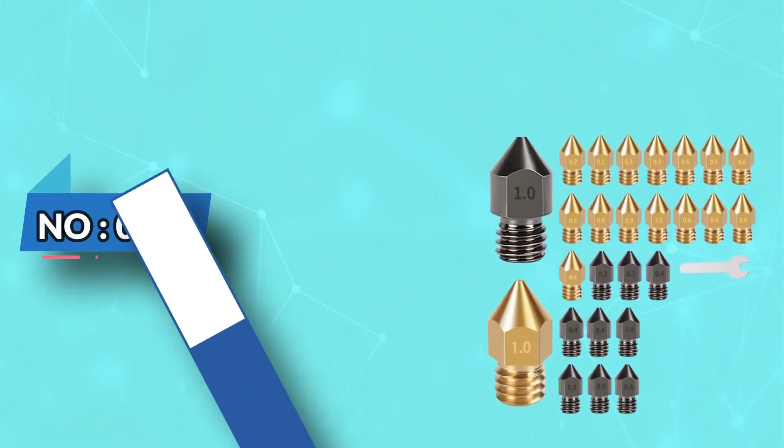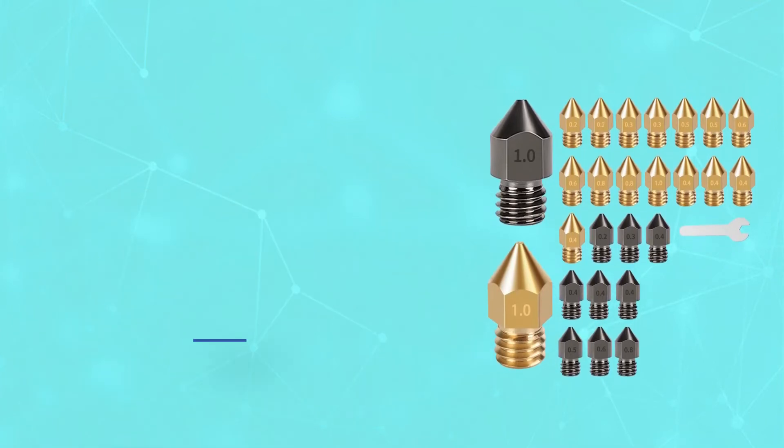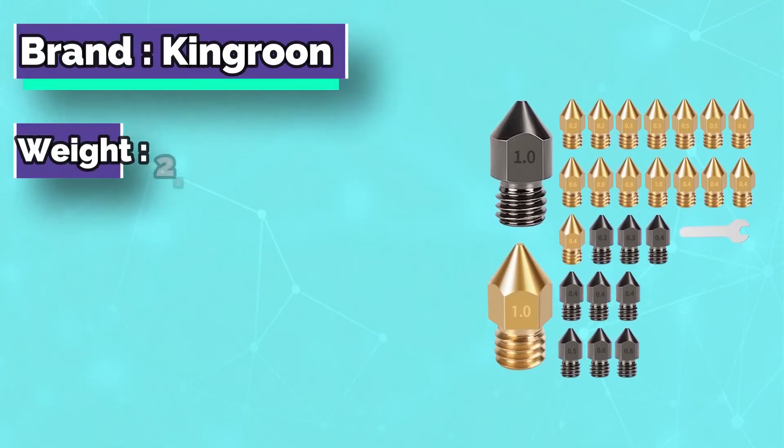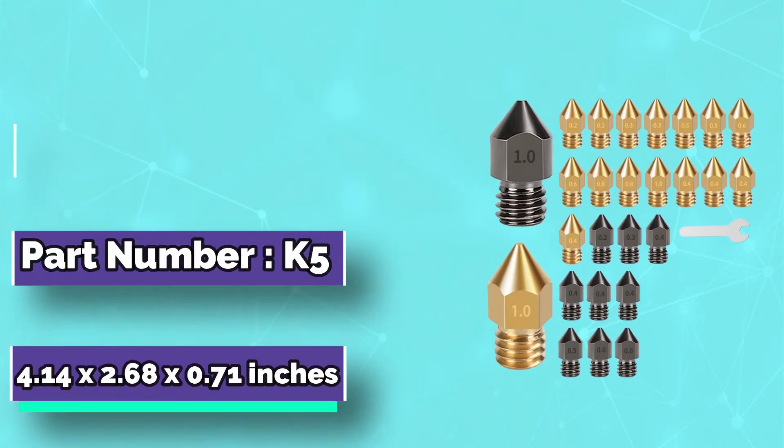Number 4: Kingred Nozzle for Ender 3. Premium quality MK8 nozzles are made of high-quality hardened steel and brass. Heavy-duty and provide a long service life. Easy to install and change.